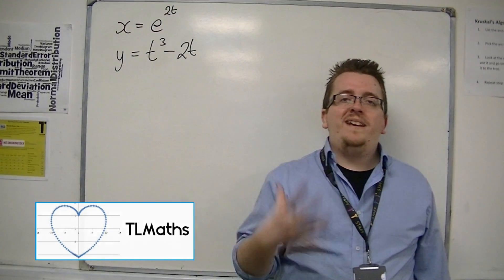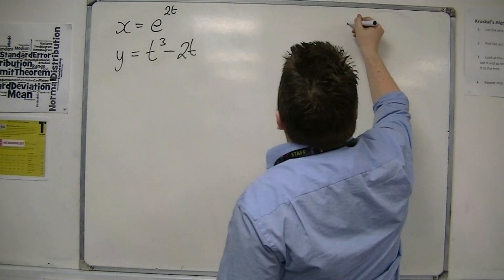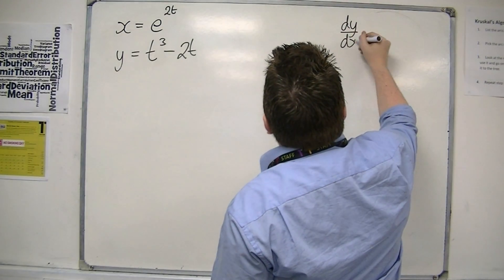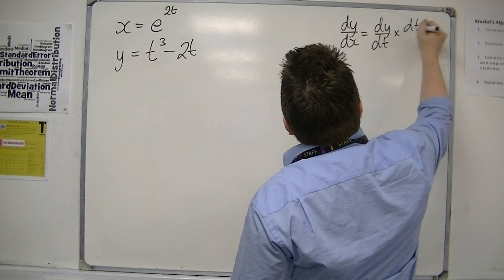So in the previous video, I introduced parametric differentiation, and it looked like this. We have dy/dx is dy/dt times dt/dx.